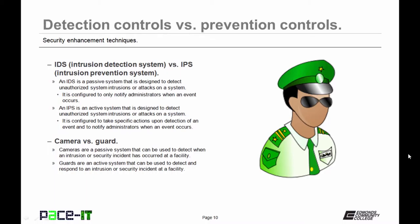The intrusion detection system versus the intrusion prevention system — that is the IDS versus the IPS. An IDS is a passive system designed to detect unauthorized system intrusions or attacks; it is configured to only notify administrators when an event occurs. An IPS is an active system designed to detect unauthorized system intrusions or attacks; it is configured to take specific action upon detection of an event and will also notify administrators. Cameras are a passive system that can be used to detect when an intrusion or security incident has occurred at a facility. Guards are an active system that can be used to detect and respond to an intrusion or security incident at a facility.